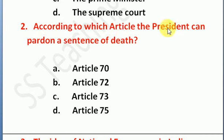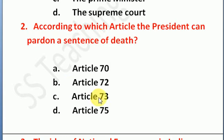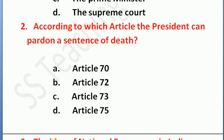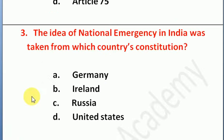Next question: according to which article can the President pardon a sentence of death? Option A: Article 70, Option B: Article 72, Option C: Article 73, Option D: Article 74. The right answer is Option B, Article 72.